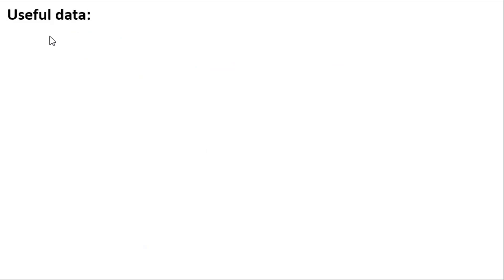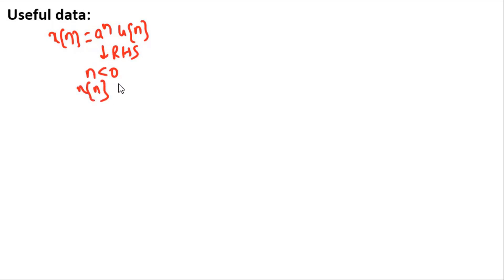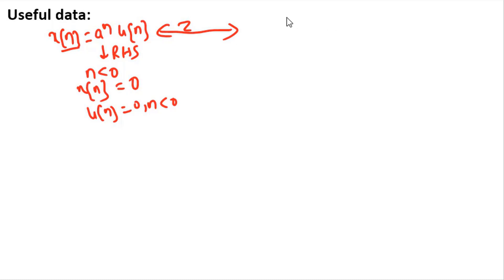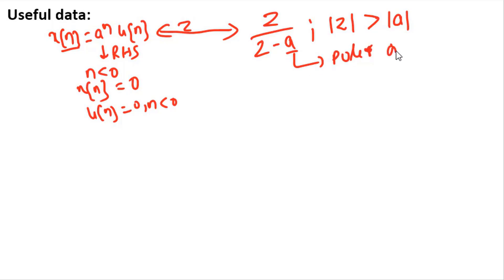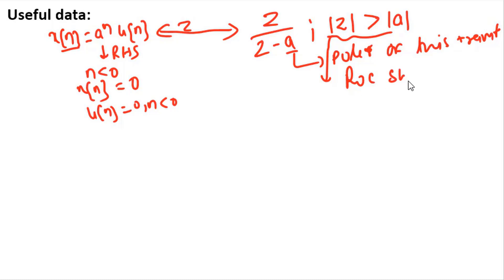The useful data: if you have a signal x[n] = a^n · u[n], this is a right-handed signal because when n < 0, u[n] = 0, so x[n] = 0 for n < 0. The Z-transform of this signal is z/(z − a), and the ROC is given by |z| > |a|, where a is the pole of this transform. This means the ROC extends outward from its pole.